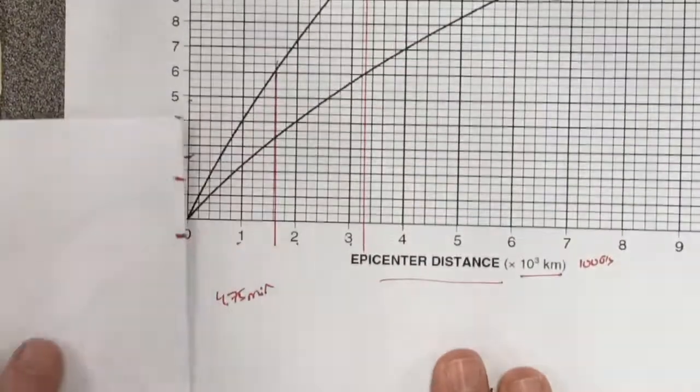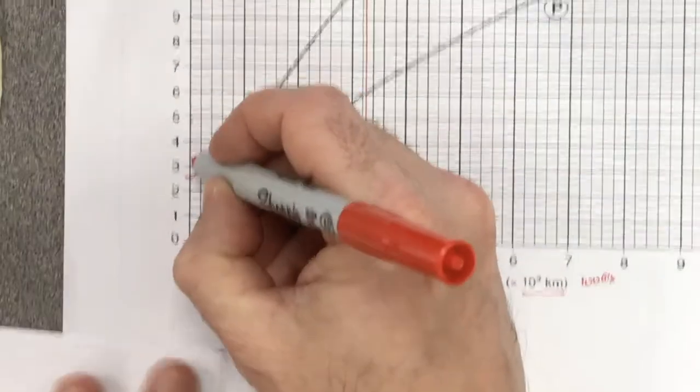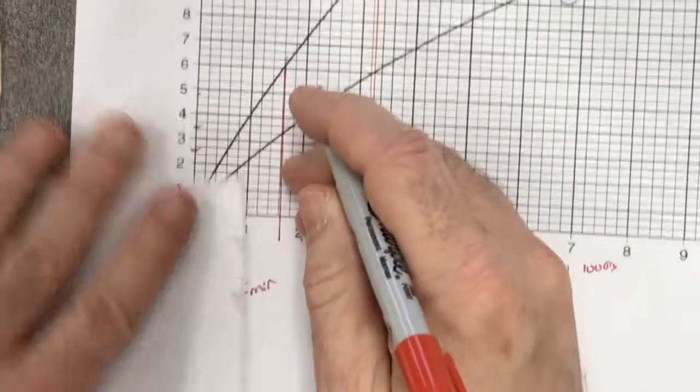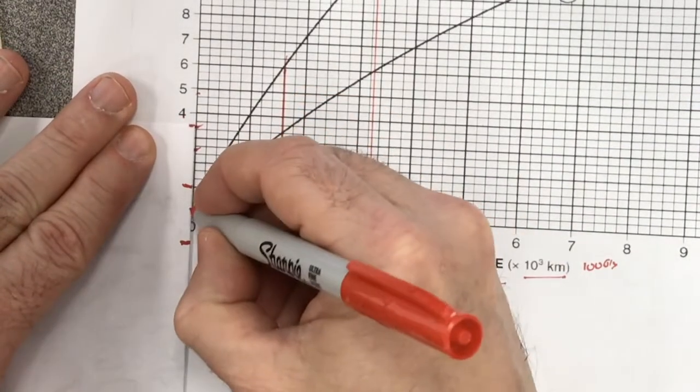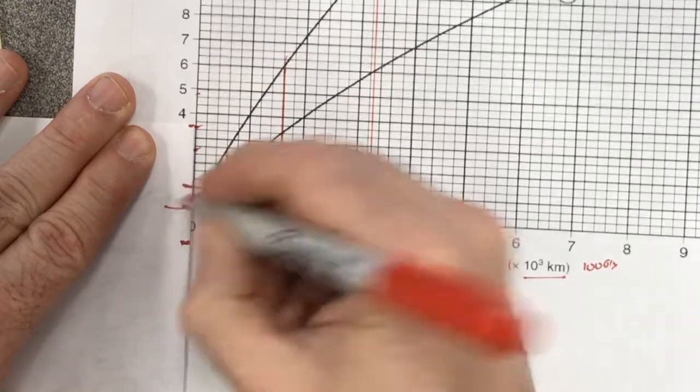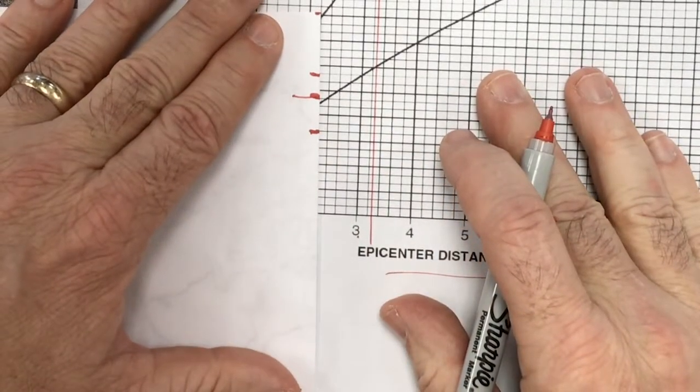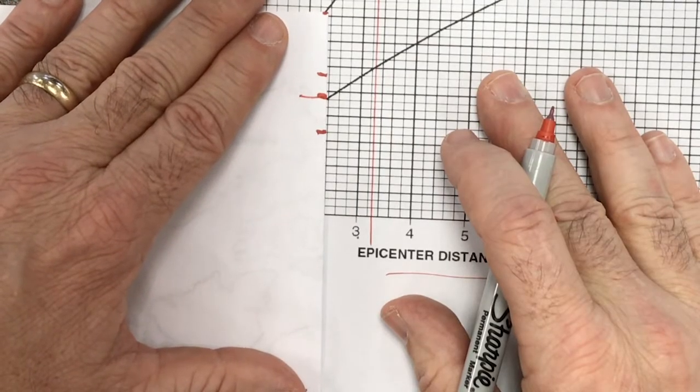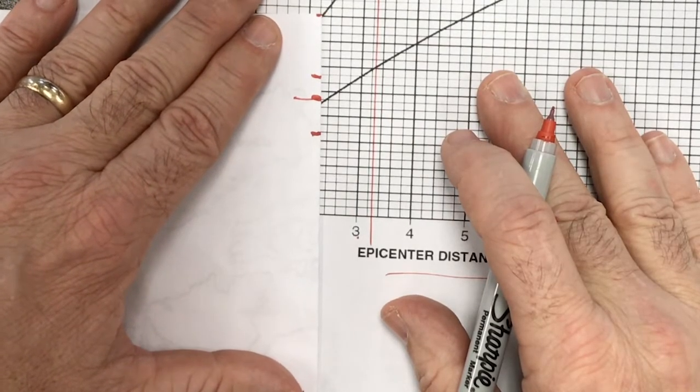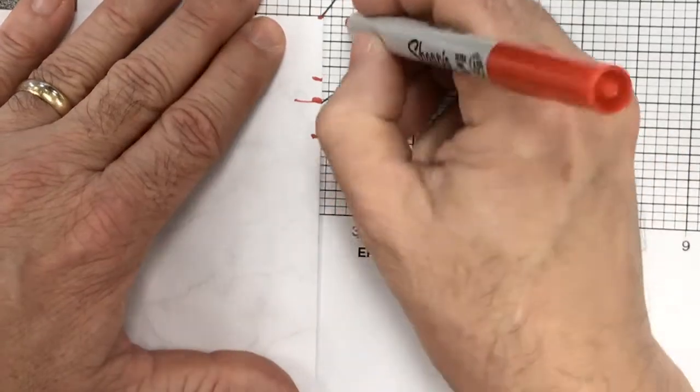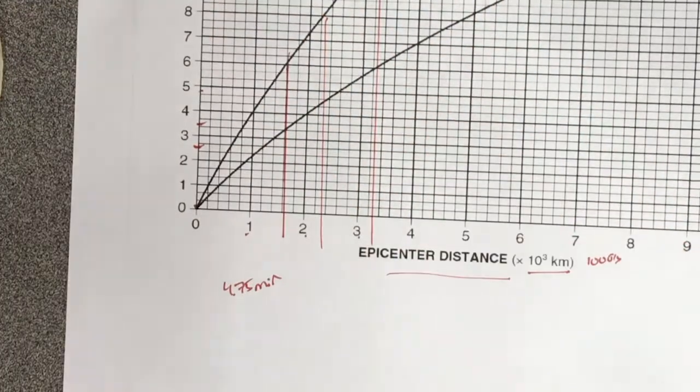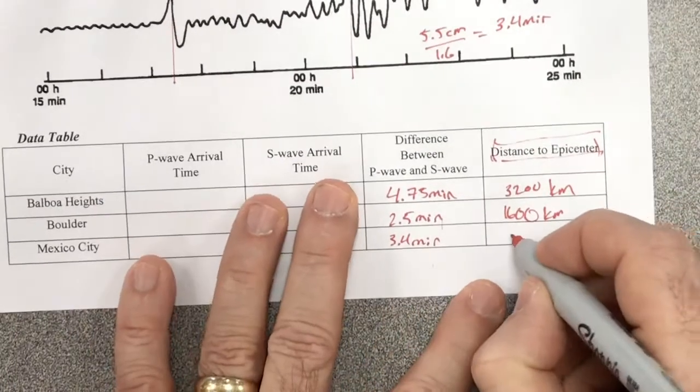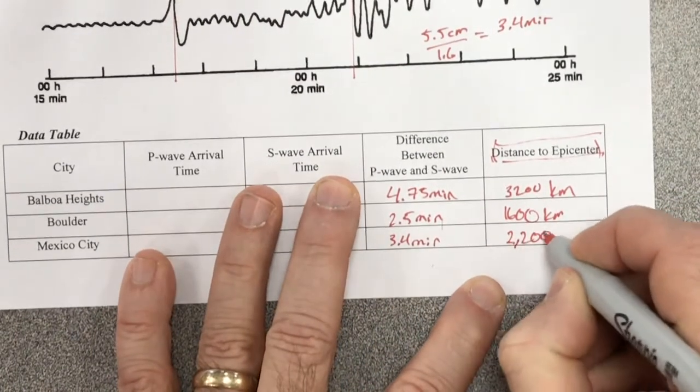And then we're going to do 3.4 minutes for Mexico City. So 3.4 is like here. Line it up. Boom. So it's this last line. So I'm going to find the gap. Well, that's pretty good. It can be a little tricky. I'm going to call it there. And that comes out to about 2,000. Let's say that's 2,200 kilometers.